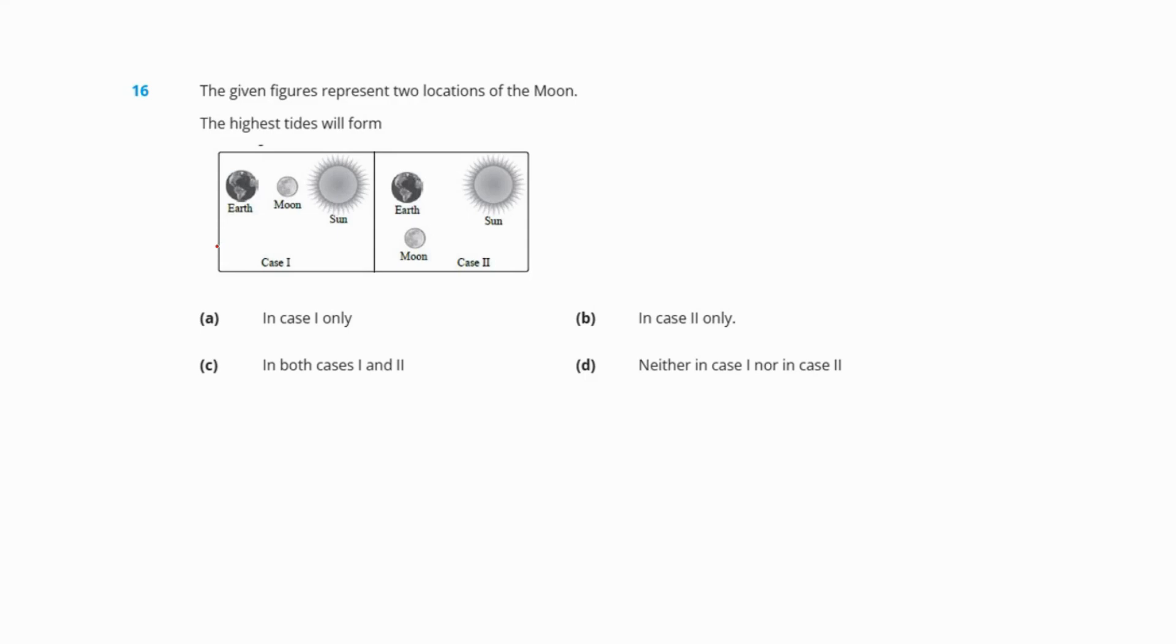Question 16: The given figure represents two locations of the moon. The highest tide will form when there is the greatest difference between high tide and low tide. In the first case, the moon, Earth, and sun are all aligned in a straight line. This will cause gravitational pull to the maximum and cause high tides. These high tides are also known as spring tides. Our correct answer is option A.